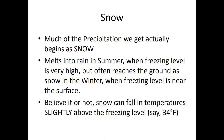As snow begins to fall toward the ground, temperatures near the ground are usually much warmer than temperatures aloft. As a result, the snow melts into rain. If the air near the ground is cold, the snow may remain snow. But even so, snow can fall in temperatures slightly above the freezing level because it didn't have enough time to melt. So temperatures of 33, 34, or 35°F — one, two, or three degrees Celsius above freezing — can still allow snow to fall.